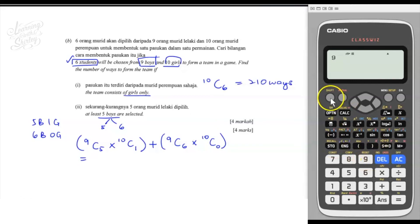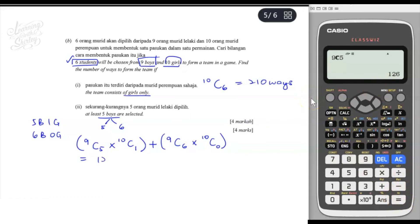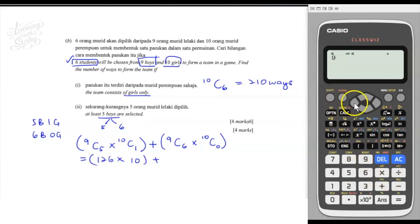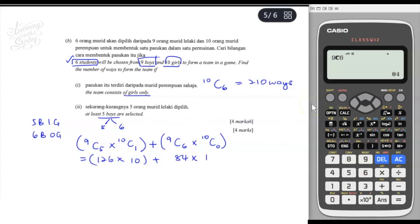Calculate each case: 9C5 = 126 and 10C1 = 10, so 5 boys and 1 girl gives 126 × 10 = 1,260. Then 9C6 = 84 and 10C0 = 1, so 6 boys and 0 girls gives 84 × 1 = 84. Total number of ways = 1,260 + 84 = 1,344 ways.